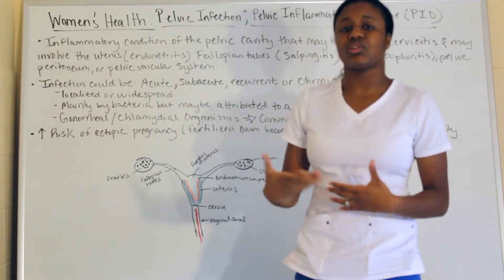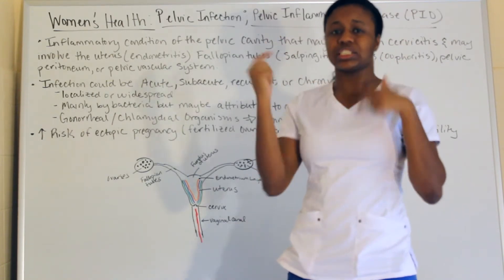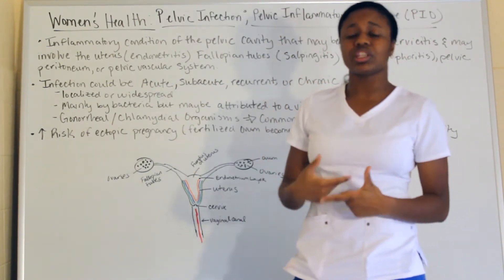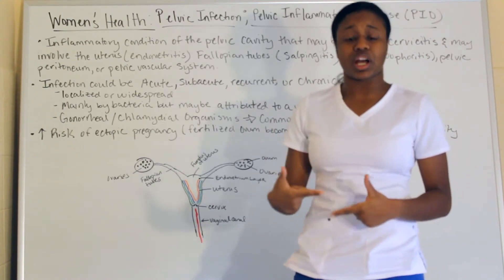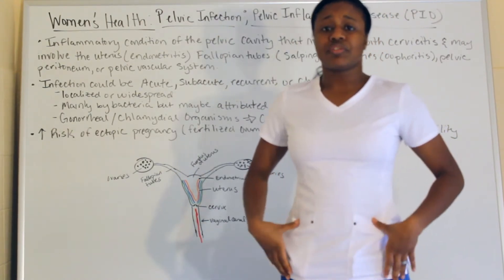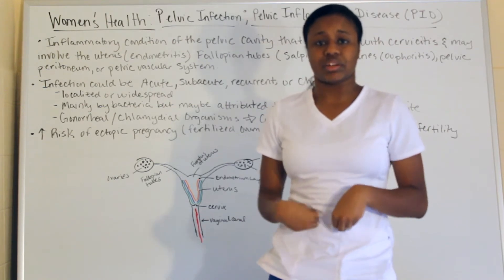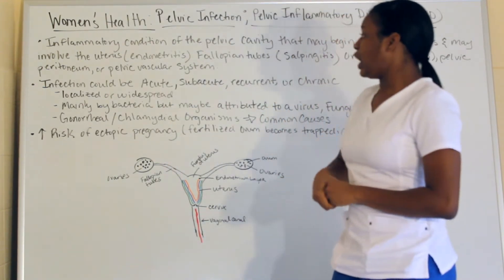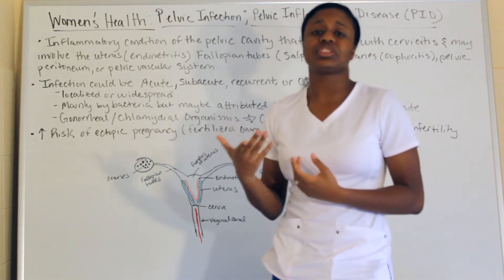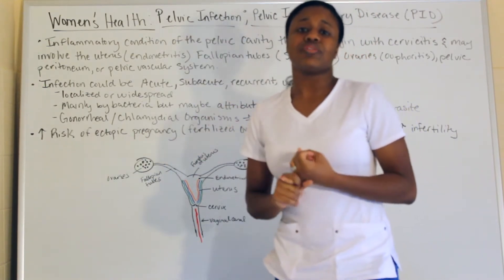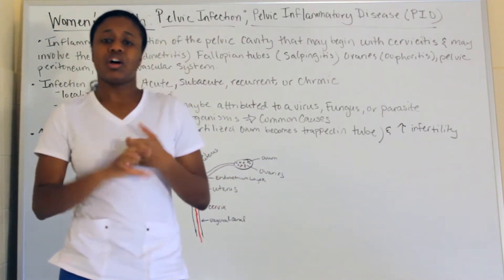All of those things are going to cause problems with the reproductive system. The pelvic region for a female contains pretty much all of her reproductive organs. PID can be caused mainly by bacteria, but it's not limited to that — viruses, fungi, or parasites can also contribute.